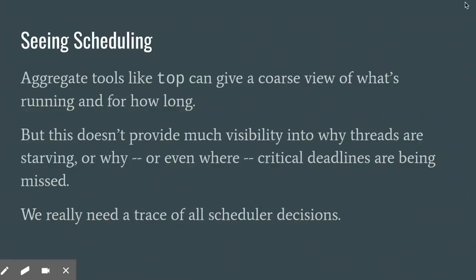There are tools like TOP that provide aggregated statistics about thread scheduling, and things like that can be useful to discover when there's gross starvation happening. But that doesn't help us tease out why the starvation is happening, and it barely helps at all when critical but fine-grained deadlines are being missed. Rather than aggregate statistics or samples, what we really need is a trace of all of the scheduler's decisions.